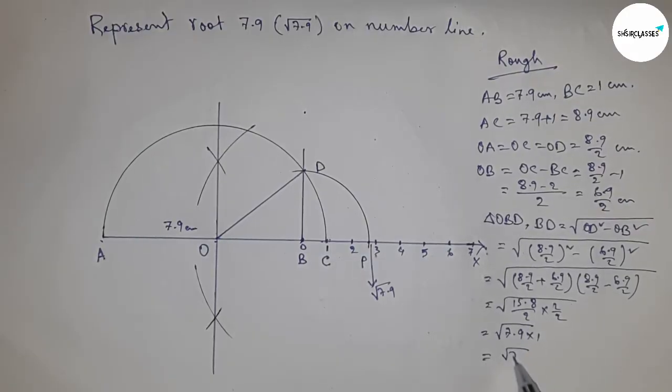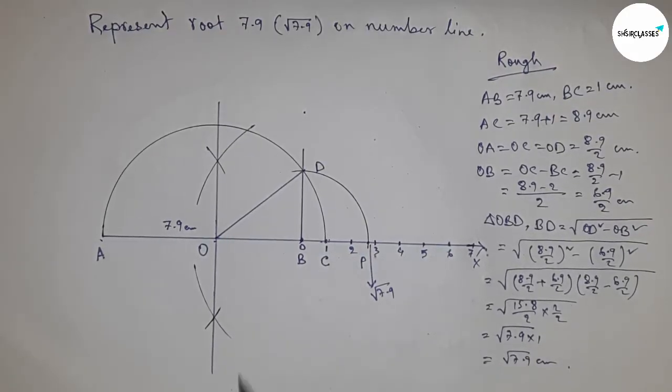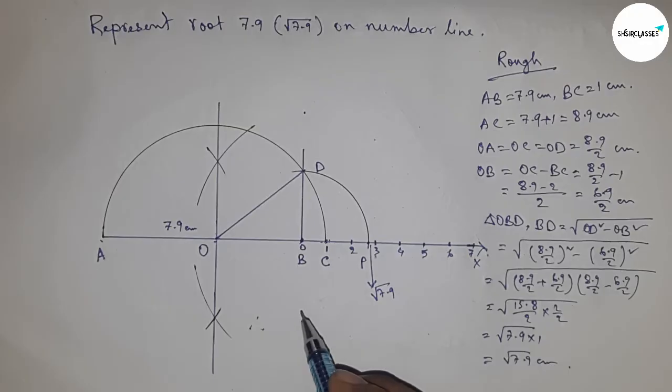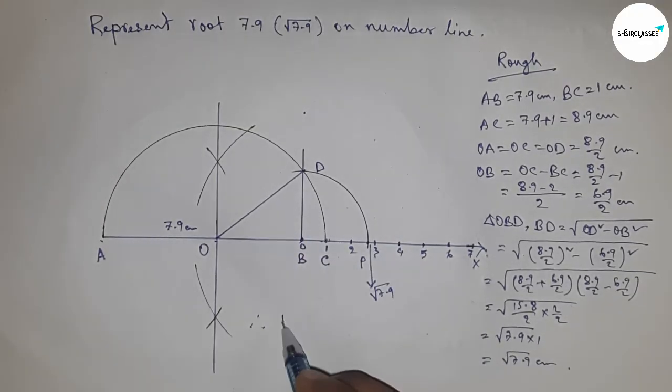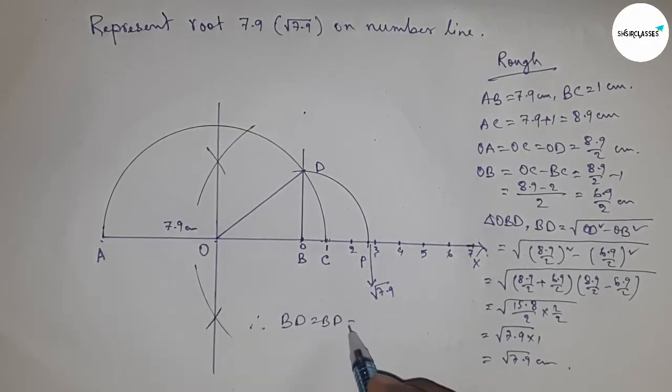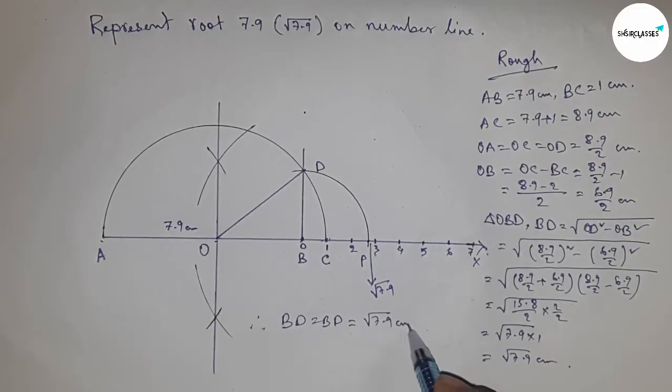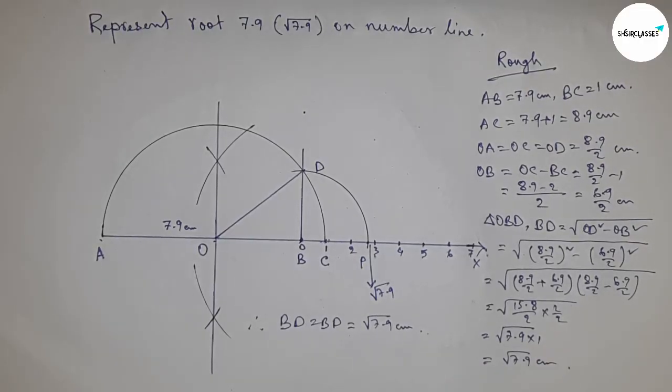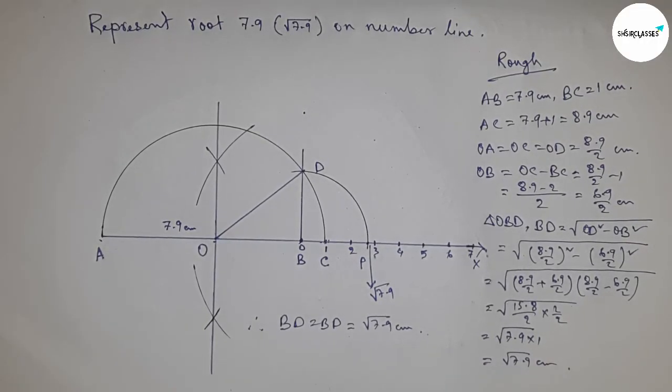Therefore, distance BD and BP are equal to root 7.9 centimeters. That's all. Thanks for watching. Please subscribe, like, and comment on my video. Thanks for watching.